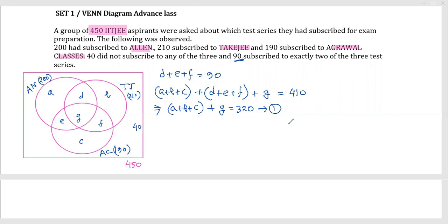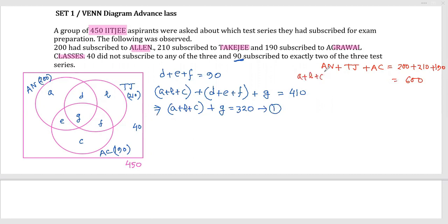For the second equation, if I add the total of all three circles — total A_N plus total T_J plus total A_C — that equals 200 plus 210 plus 190, which is 600. When expanding this, region d appears twice and region g appears three times, so it equals a plus b plus c plus 2(d plus e plus f) plus 3g, which equals 600.